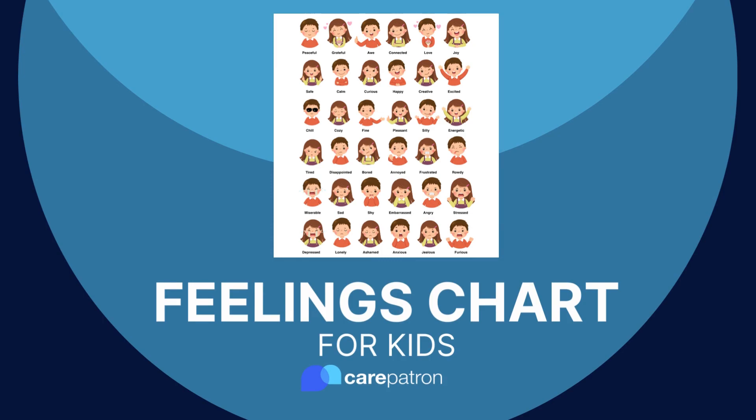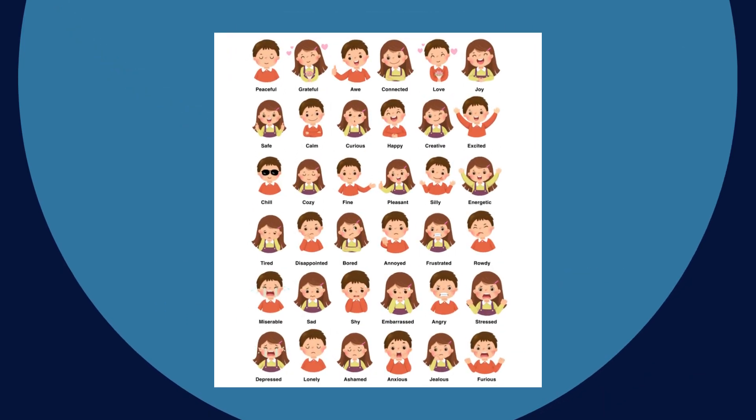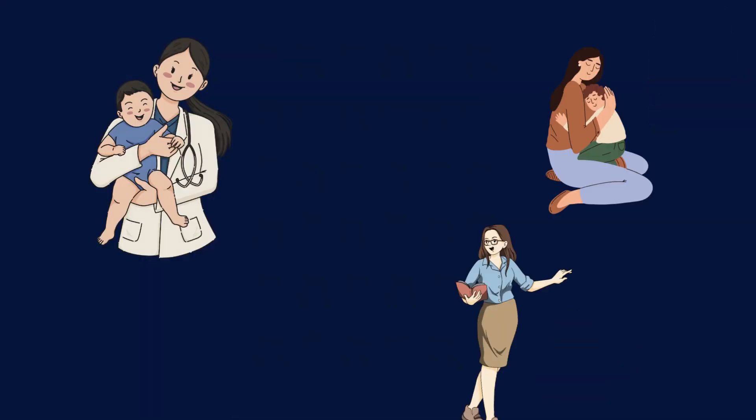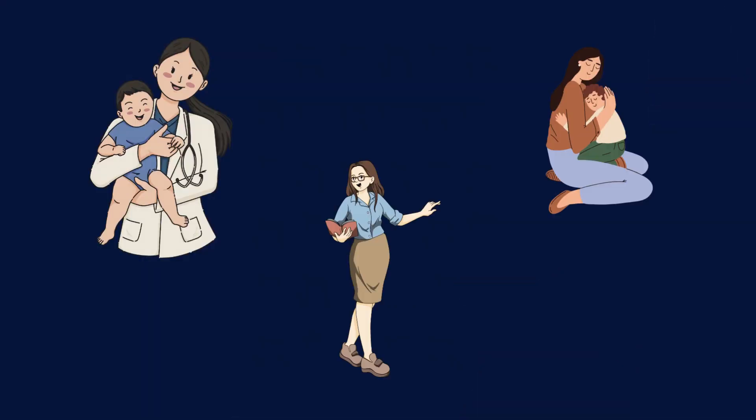A Feelings Chart for Kids is a list of emotions organised in a chart with corresponding facial cues that express each emotion. It is commonly used by practitioners, teachers, parents, or caregivers of children to help them identify and communicate their feelings to improve their emotional literacy.